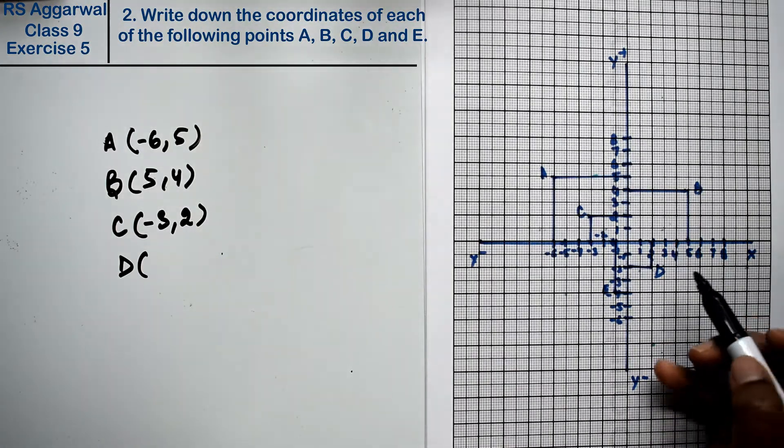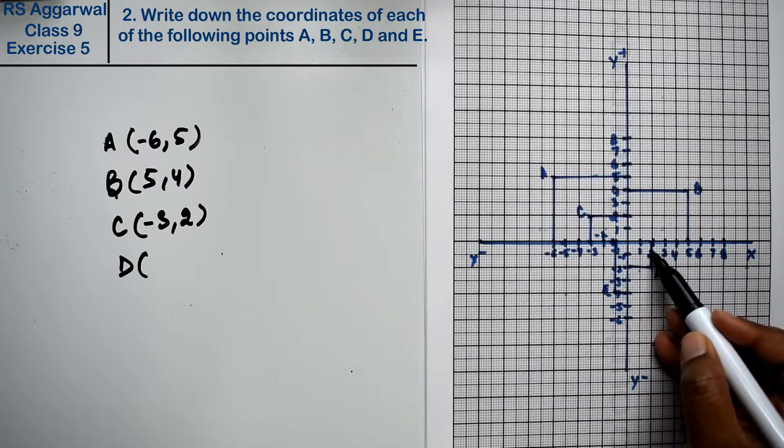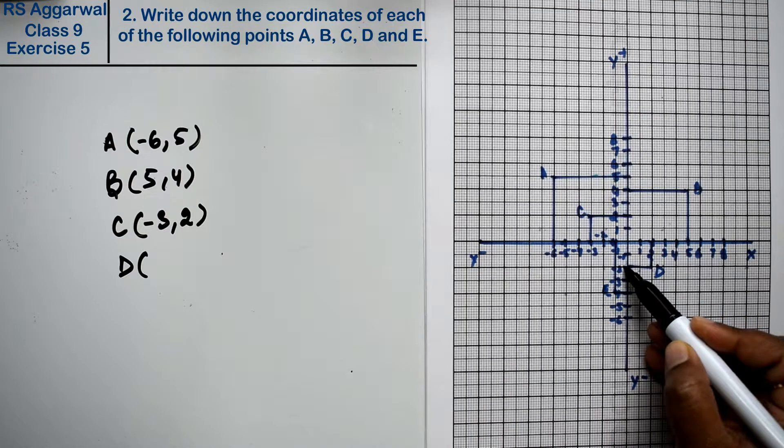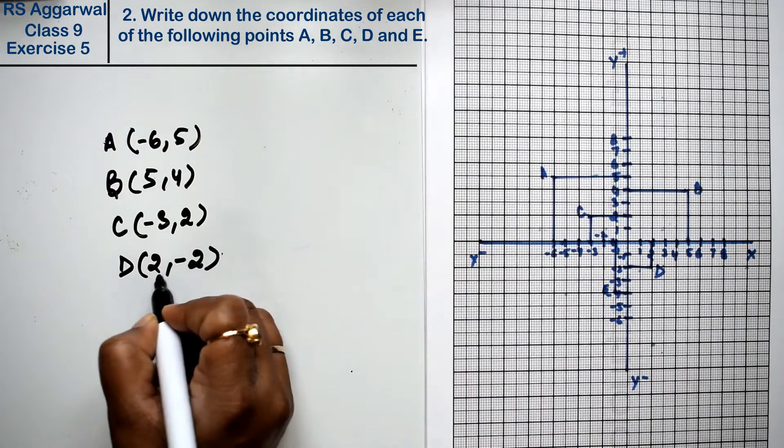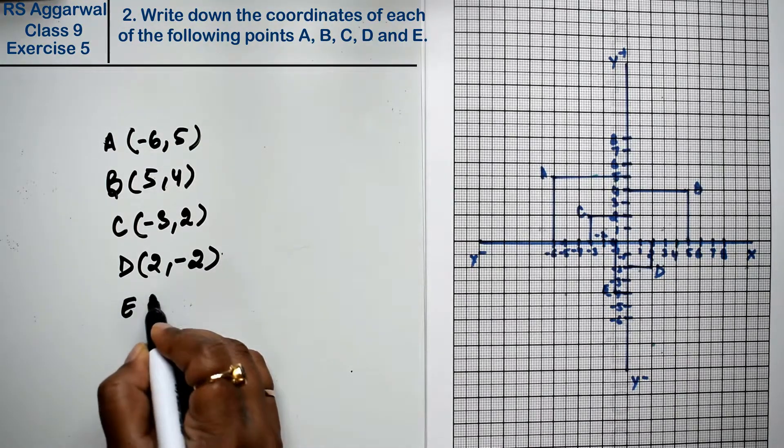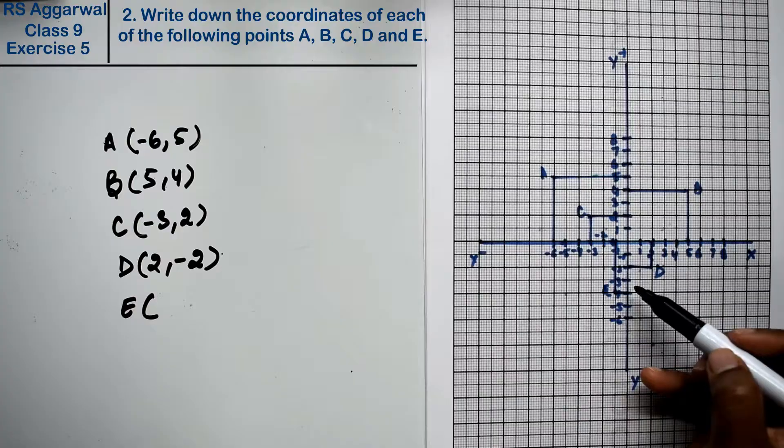See where is D. X is 2 and Y is minus 2. 2 and minus 2. First look at X value always.